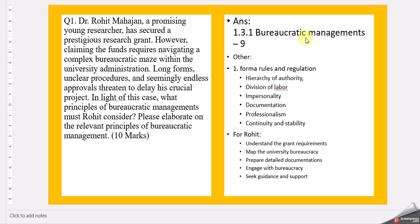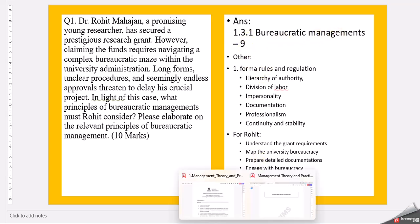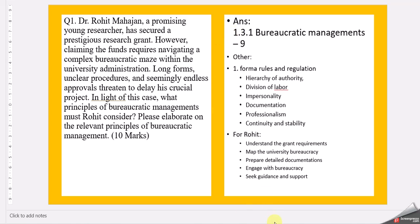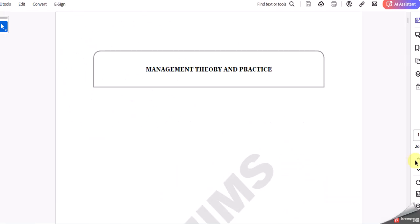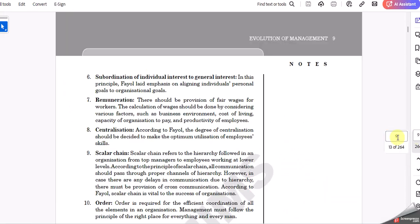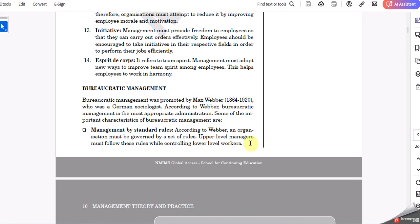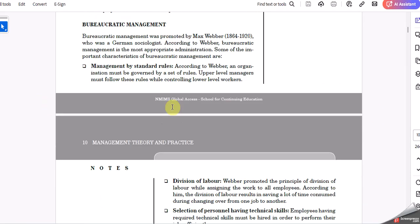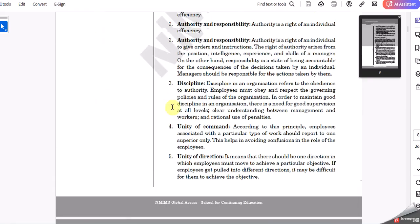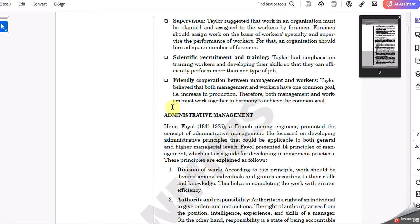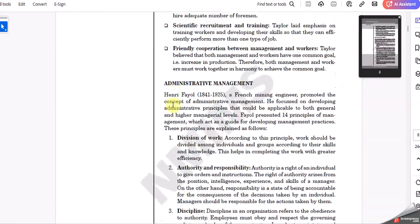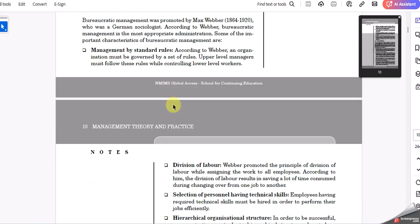Let's see. Bureaucratic management can be found in Chapter 1, page 9. You have brief information on bureaucratic management there. Since this is a case study, you can provide your answer around bureaucratic management for Rohit Mahajan.